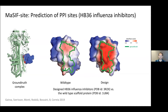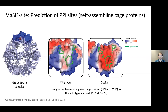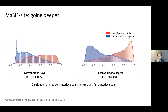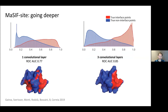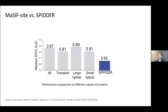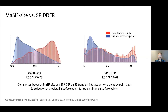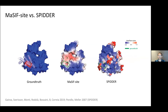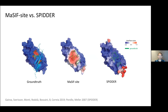Further examples include an influenza inhibitor and complex proteins assembled into cages. Going deeper with multiple convolutional layers — for example three — gives better results with smoother scores. Compared to other methods used for predicting interaction sites on proteins, such as SPIDER, we have significantly better performance. In difficult cases, SPIDER's prediction is rather useless, while our method continues to perform well.